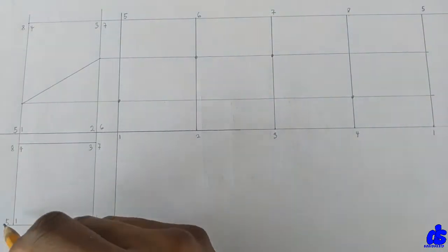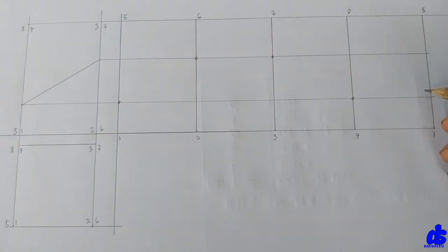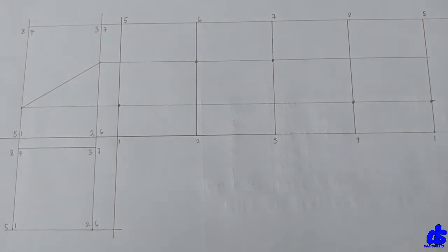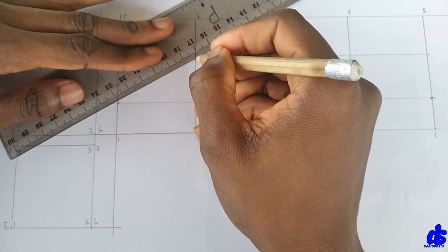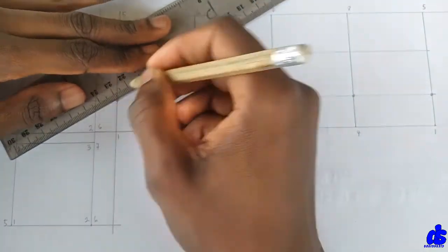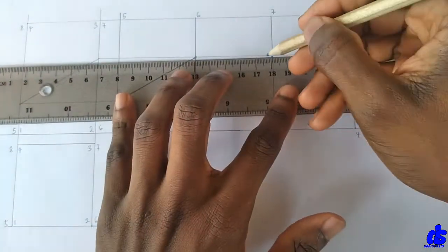Then back to 1. We have 51 on this line. 51. We mark here. No, we mark here.